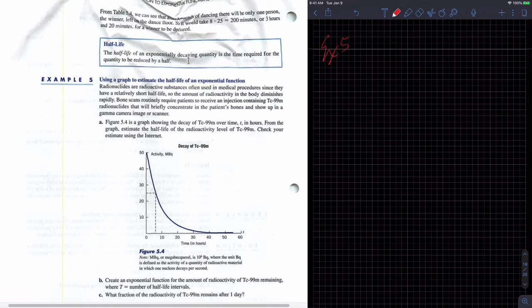So example five, using a graph to estimate the half-life of an exponential function. Radionuclides are radioactive substances, please stop laughing at me, often used in medical procedures since they have a relatively short half-life. That's like barium and whatnot, right? I don't know.